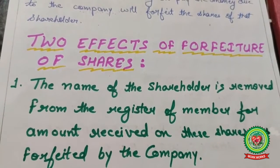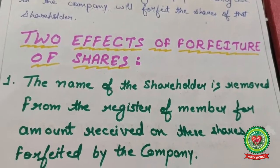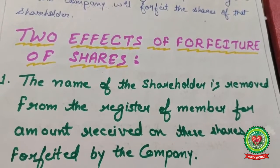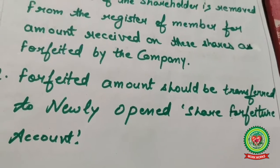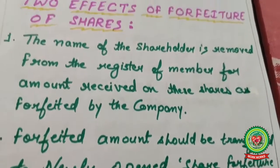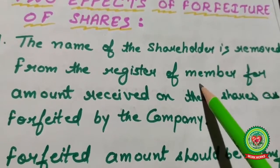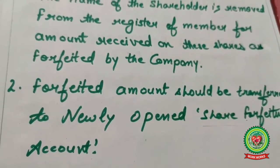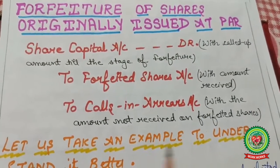Two effects of forfeiture of shares: Effect one — the name of the shareholder is removed from the register of members, and the amount received on these shares is forfeited by the company. Effect two — the forfeited amount is transferred to a newly opened Share Forfeiture Account. So the shareholder's name is removed from the register, and a Share Forfeiture Account is opened.